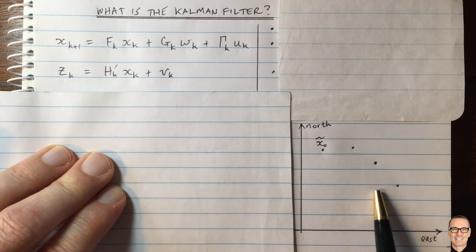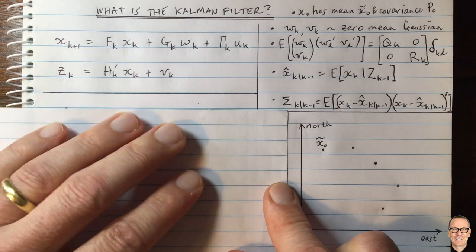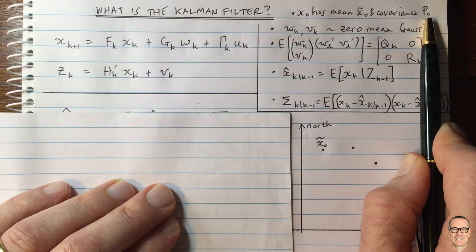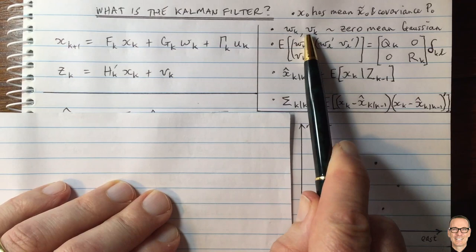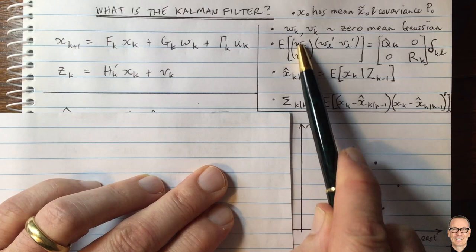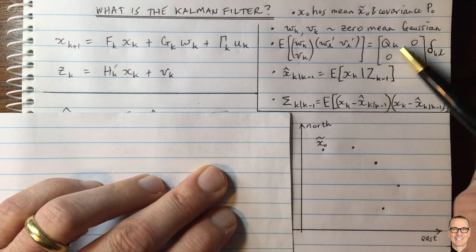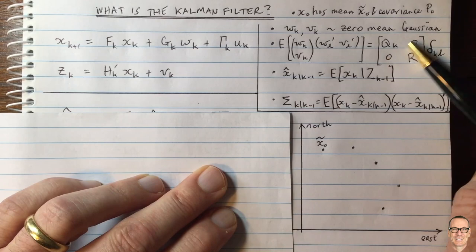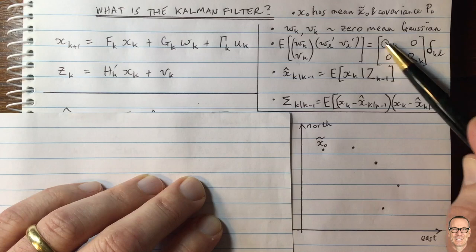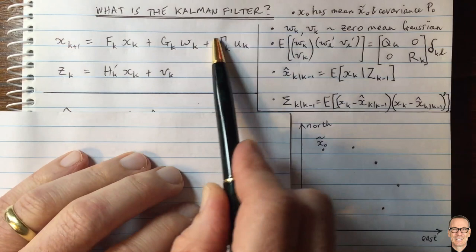Let's write down some strict assumptions we're making. The initial state of X is unknown but has a mean of X-tilde-naught and a covariance of matrix P-naught. W and V are zero mean Gaussian, and this equation shows the relationship between them — the expected value of this vector times itself transposed shows zeros on the off-diagonal. This tells us there's no correlation between the noise in the state and the noise in the observations. This delta tells us they have autocorrelation only when K equals L — so they're independent in time.